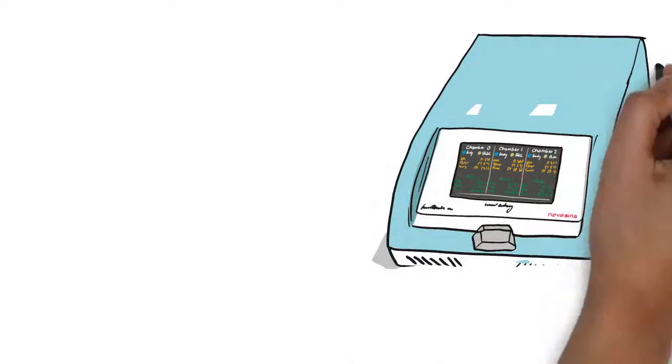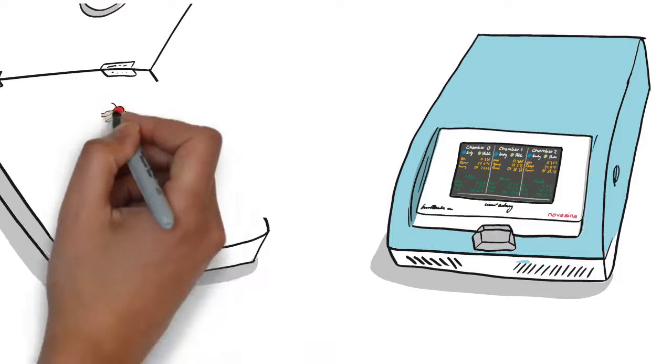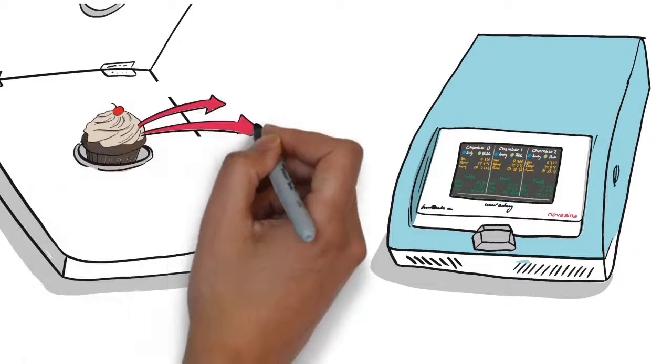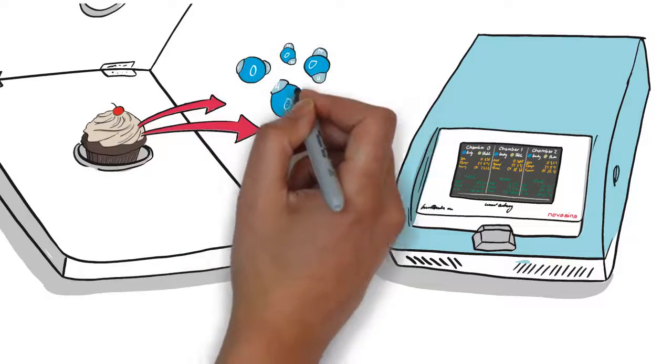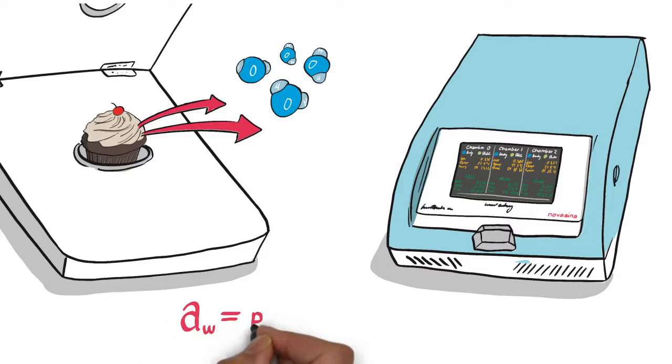Walter's NOVASINA water activity meter is measuring the free water that can leave the product. It effectively detects this unbound water by measuring the equilibrium relative humidity over the surface. This value is then converted into a water activity measurement.